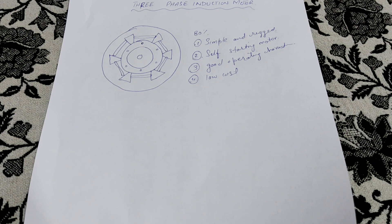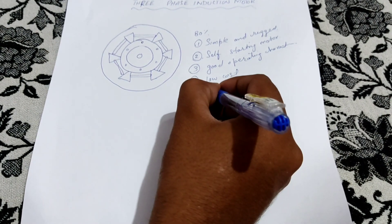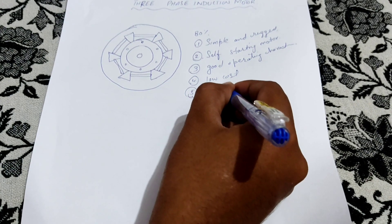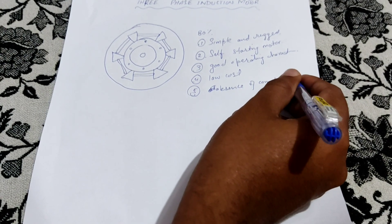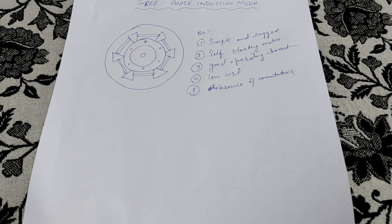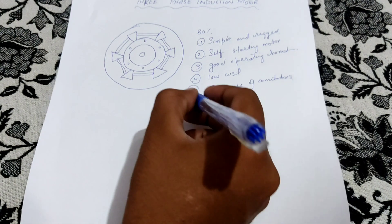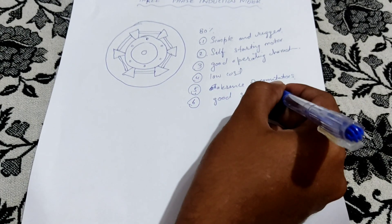Number four is low cost. Number five is absence of commutators — we are not using commutators in our induction motor, which eliminates sparking in the brushes. Number six is good speed regulation — for the slip ring induction motor we can vary the speed by applying external resistance through the brushes and slip rings.